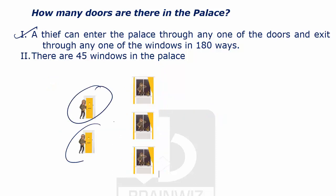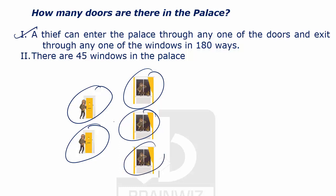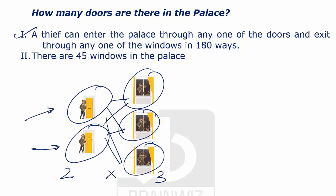Now assume there are two doors and three windows. The thief can enter the first door and escape from any one of the three windows, or enter the second door and exit from the first, second, or third window. So he has a total of six ways to escape.